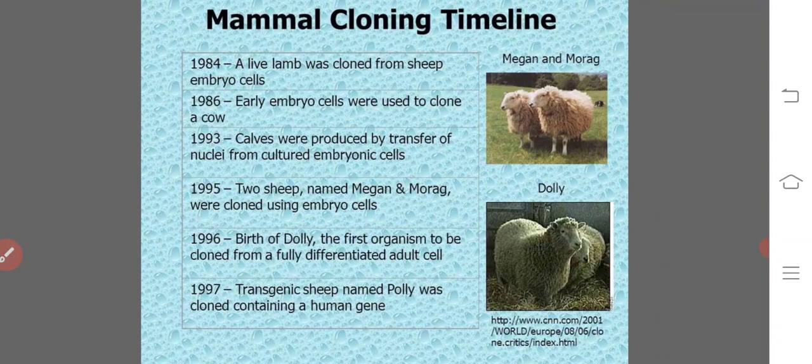Mammal cloning timeline: In 1984, a live lamb was cloned from sheep embryo cells. In 1986, early embryo cells were used to clone a cow. In 1993, cows were produced by transfer of nuclei from cultured embryonic cells. In 1995, two sheep named Megan and Morag were cloned using embryo cells. In 1996, Dolly was born — the first organism cloned from a fully differentiated adult cell. In 1997, a transgenic sheep named Polly was cloned containing a human gene for a recombinant protein.